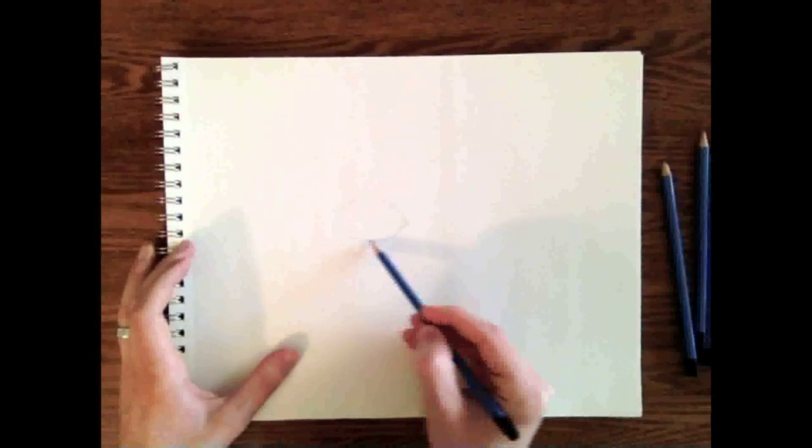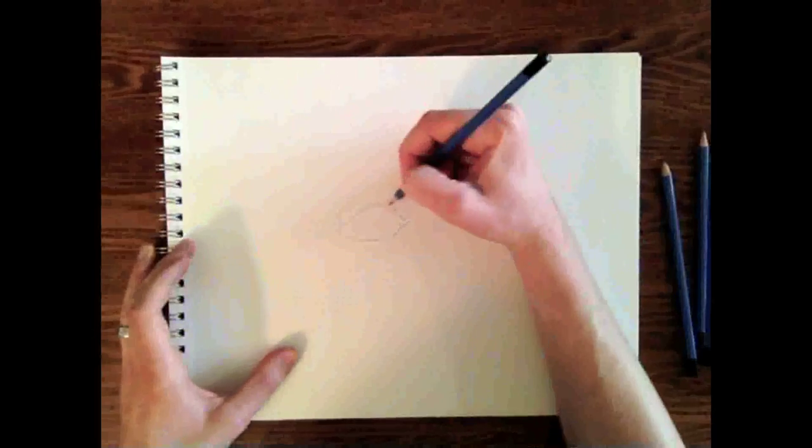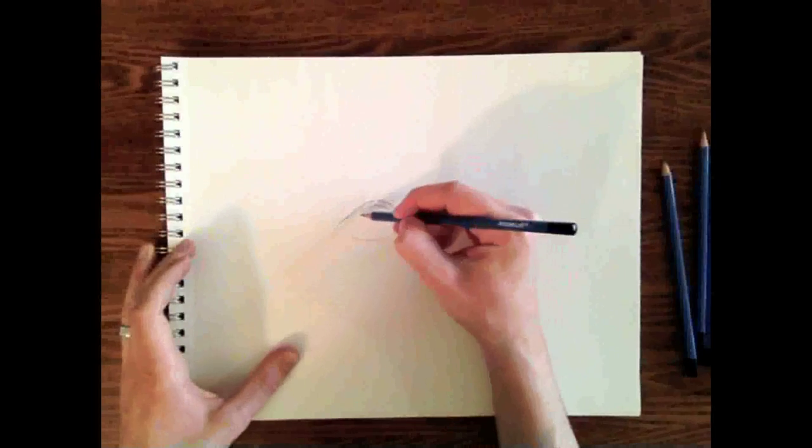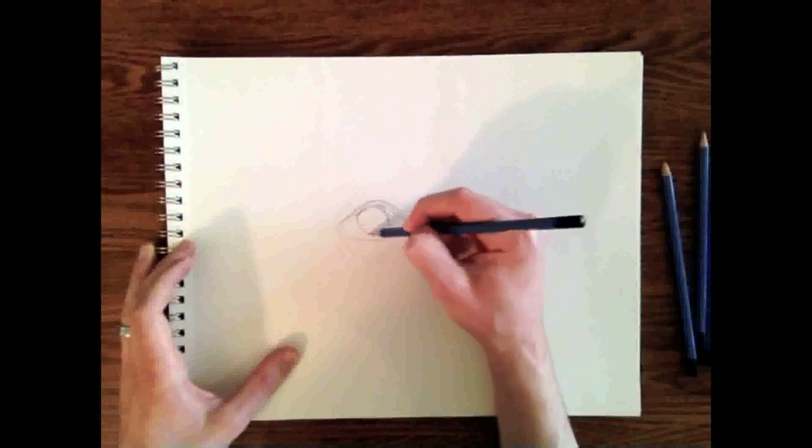We draw in the tear duct and then the eyelid wraps around the eye. So it's kind of an almond shape, but it's not symmetrical.